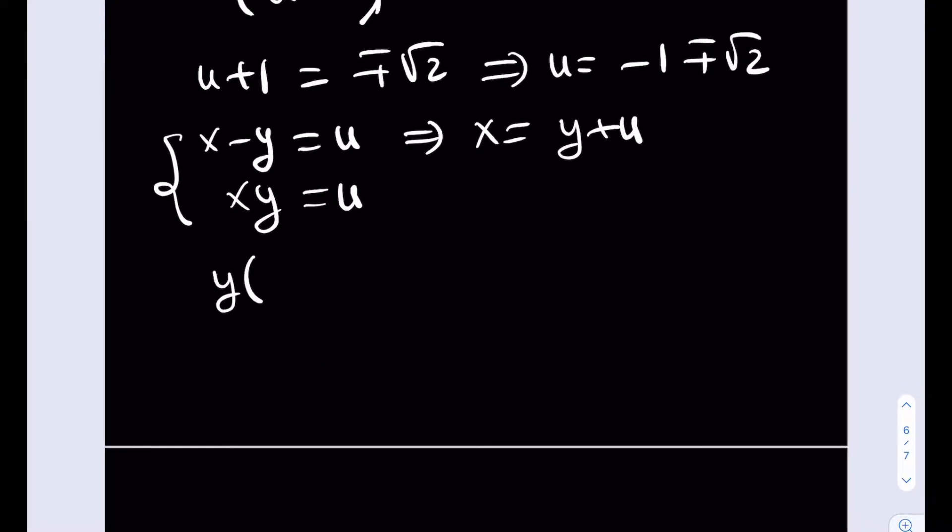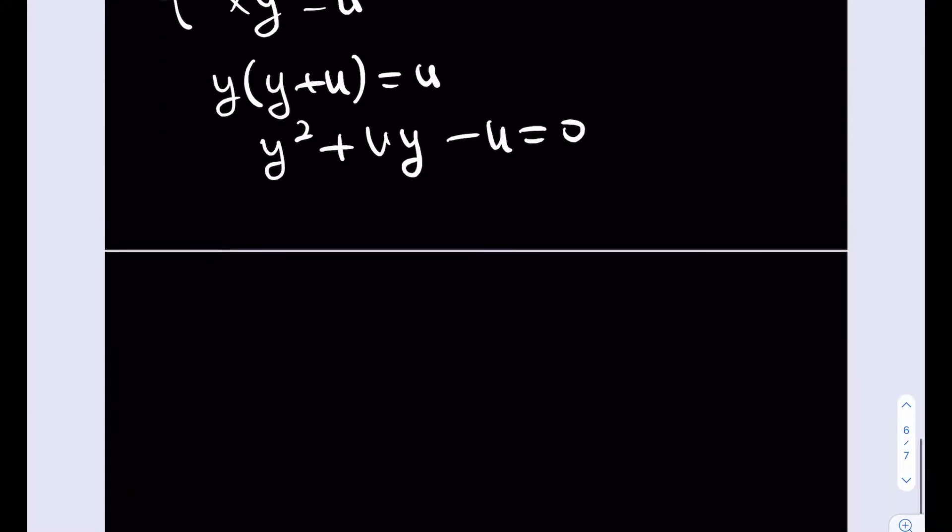Let's do that. y times x, which is y plus u, equals u. Then I'm going to expand this: y squared plus uy minus u equals 0. By using the quadratic formula, I'm actually able to solve this equation in terms of u. Let's do that. Negative u plus minus the square root of b squared minus 4ac, which is going to be 4u in this case, and that divided by 2a.